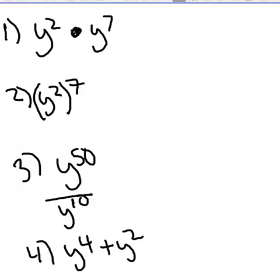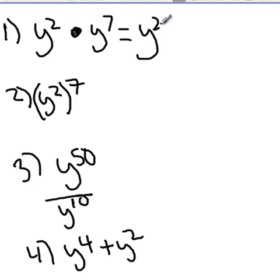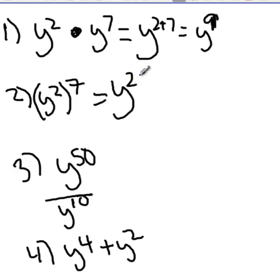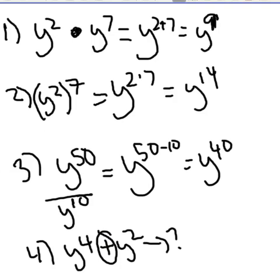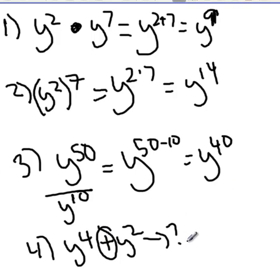Let's look at four problems that ask you to synthesize all three rules. y to the second times y to the seventh — that's the first rule, so it's y to the two plus seven, or y to the ninth. y to the second to the seventh — exponent to an exponent, so multiply exponents: y to the fourteenth. y to the fiftieth over y to the tenth — subtraction rule: y to the fiftieth minus ten, which is y to the fortieth. And y to the fourth plus y to the second — there's nothing you can do here. The rules we learned do not involve a plus sign. These are not like terms, so it cannot be simplified. It's just y to the fourth plus y to the second.